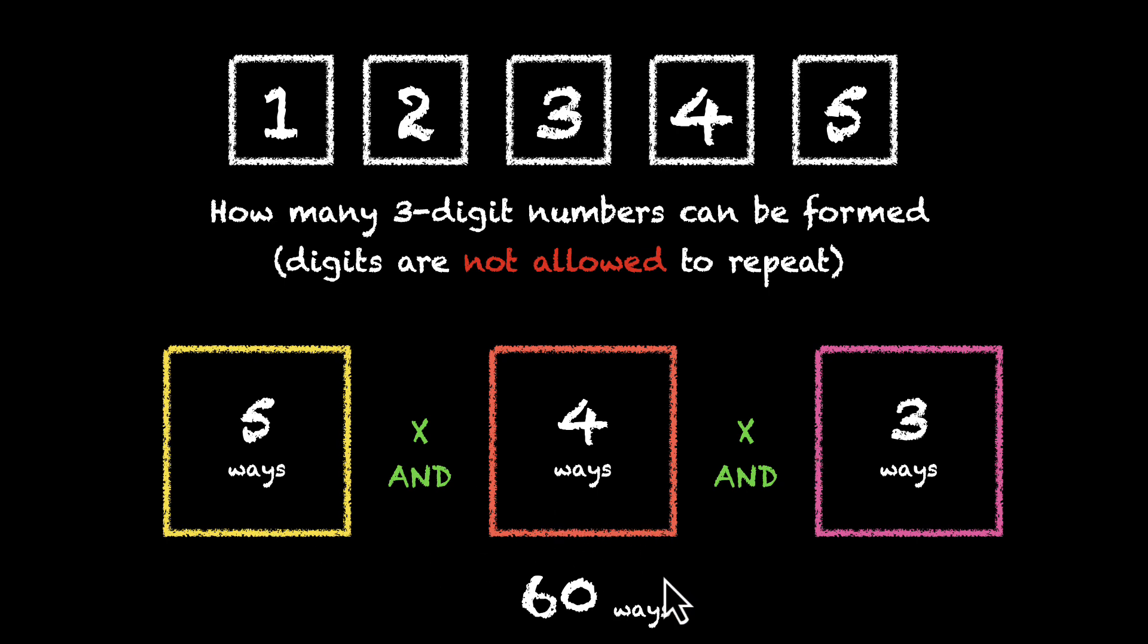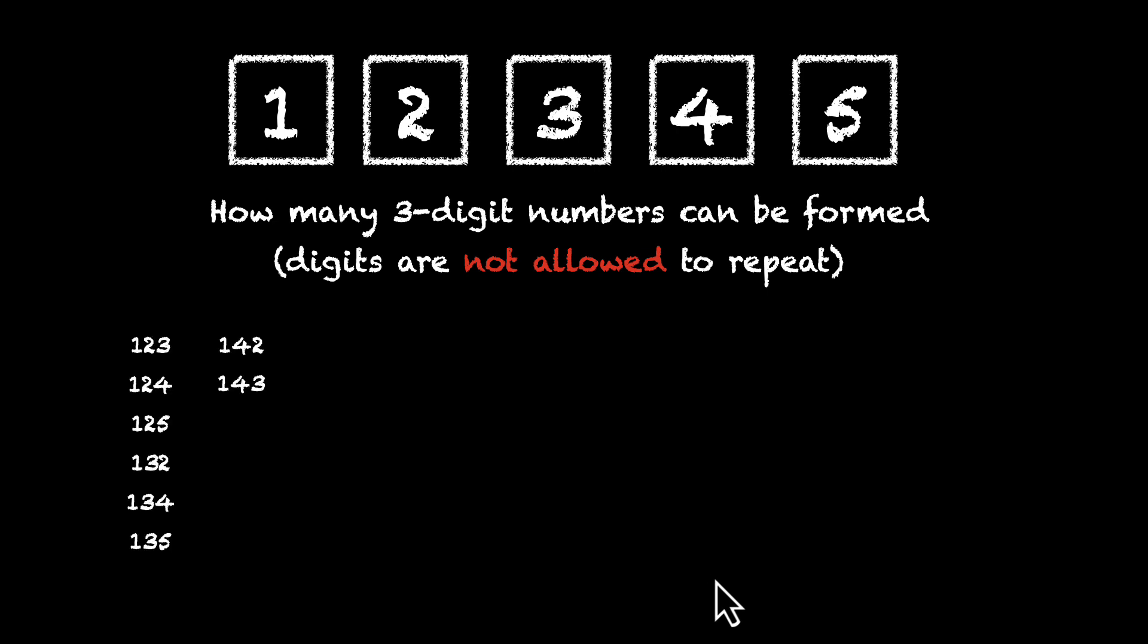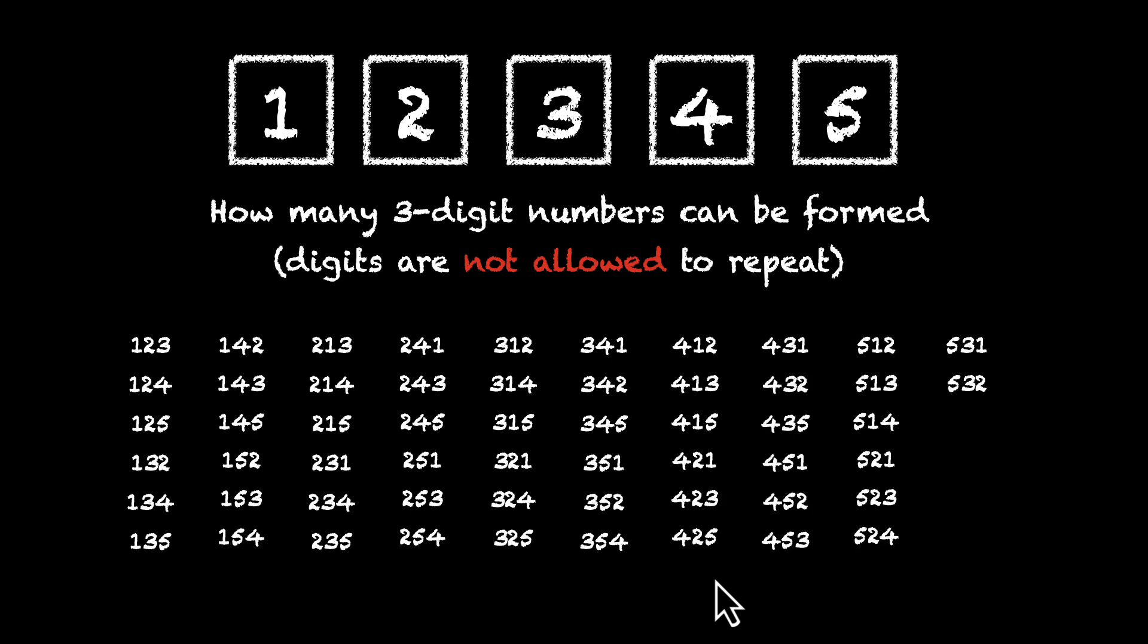So no matter what we do, we will always end up with 60 ways. And if you don't believe me, here are those 60 different 3 digit numbers. Let me put them down. Okay, here they are. You can pause the video and double check my answer. None of these numbers have digits that are repeating.